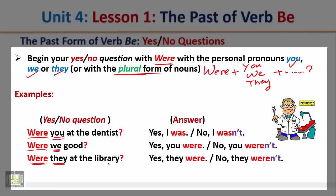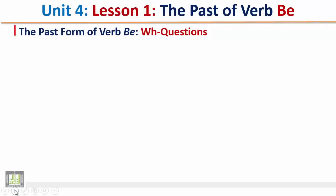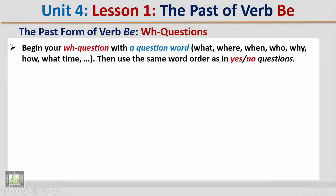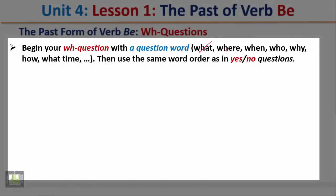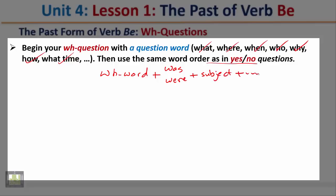So, in yes/no questions, we begin with the verb 'was' or 'were,' plus the subject, and then complete your question. The past form of verb be — WH questions. Begin your WH question with a question word like what, where, when, who, why, how, what time, etc. Then use the same word order as in yes/no questions: WH word + verb (was/were) + subject, then complete your question.